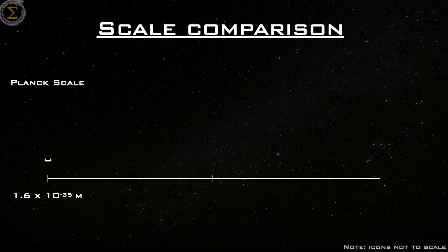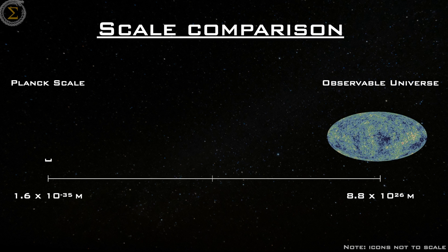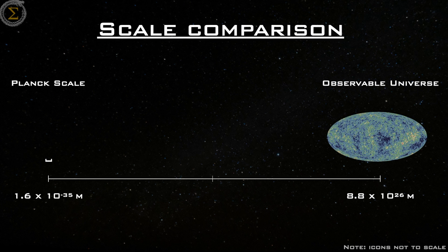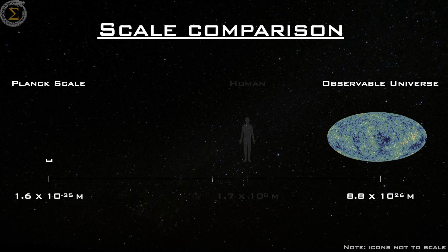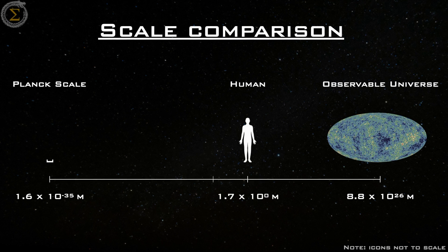to prove that the shortest unit of measurement in our universe is 1.6 times 10 to the negative 35 meters. To provide you a sense of scale, the observable universe is approximately 10 to the 26 meters. You and I are about 10 orders of magnitude closer in size to the entire observable universe than we are to the Planck length.